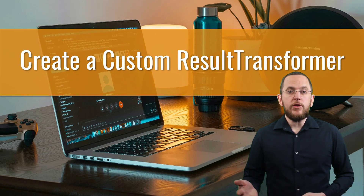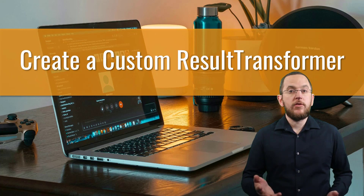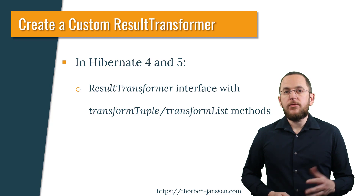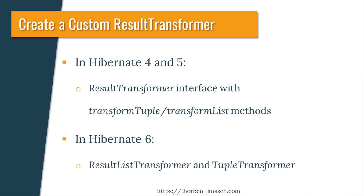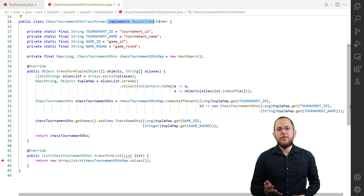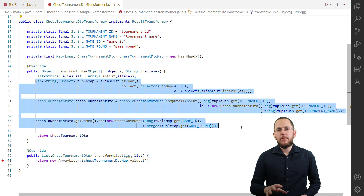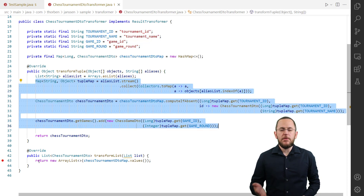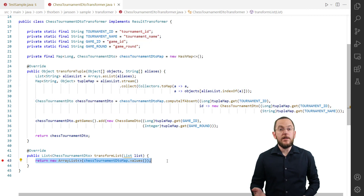You can implement a similar mapping using Hibernate's ResultTransformer. The specific implementation depends on your Hibernate version. In Hibernate 4 and 5, you need to implement the ResultTransformer interface and its TransformTuple and TransformList methods. In Hibernate 6, the ResultTransformer interface got split into the TupleTransformer and the ResultListTransformer interface. For this mapping, you need to implement the TupleTransformer interface and its TransformTuple method. The method signature and your implementation of the TransformTuple method are identical for all Hibernate versions. I use the same algorithm in the TransformTuple method as in the previous example. The TransformList method uses the ChessTournamentDTO map to remove the duplicates from the query result.